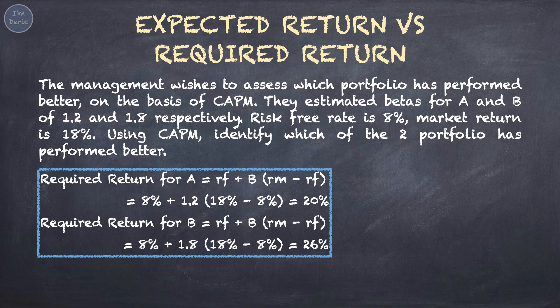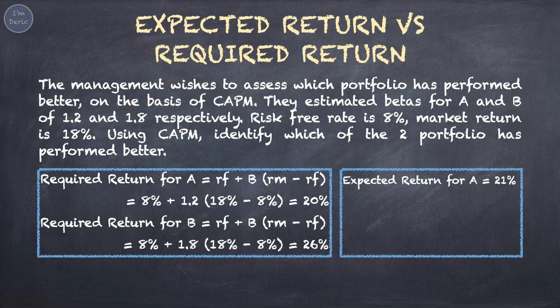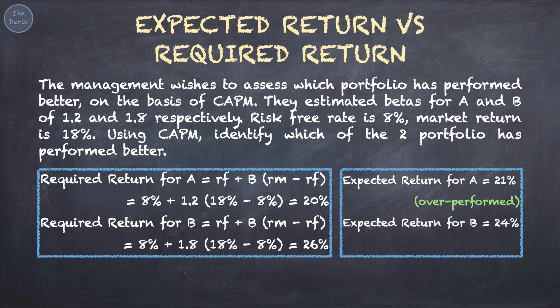Let's compare the required return to the expected return we just calculated. For portfolio A: required return 20%, expected return 21% — meaning portfolio A overperformed; the expected is higher than the required. For portfolio B: required return 26%, expected return 24% — so portfolio B underperformed; the expected is lower than the required.